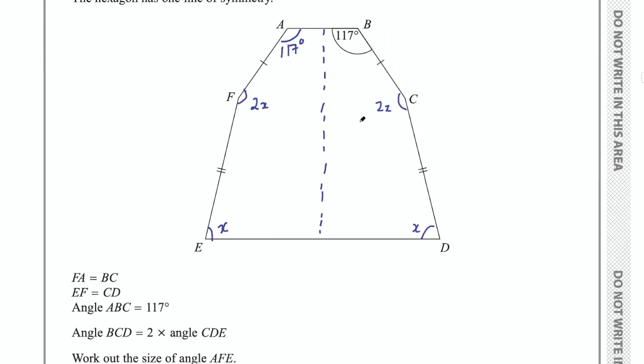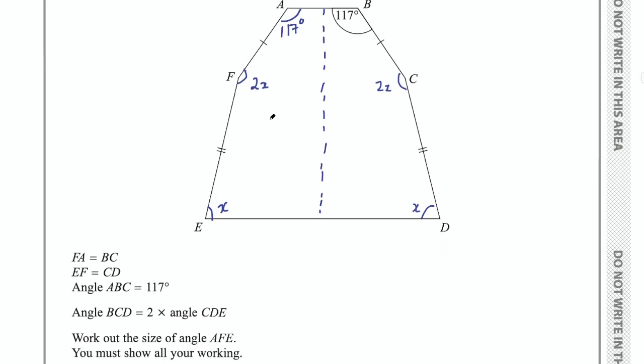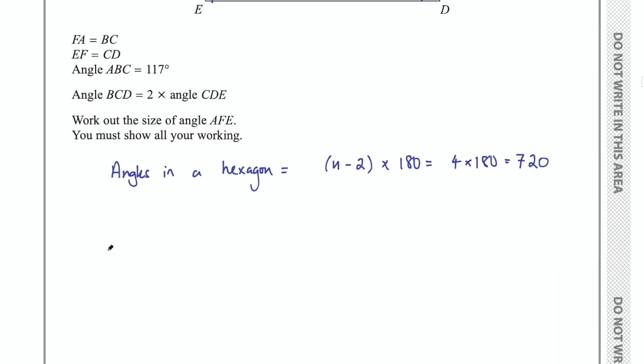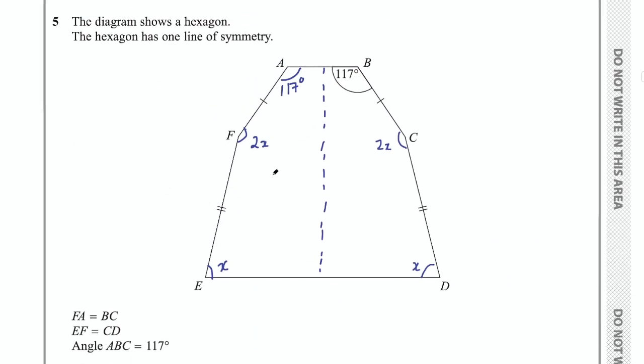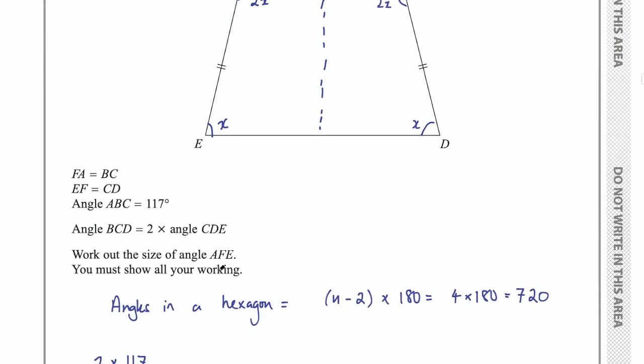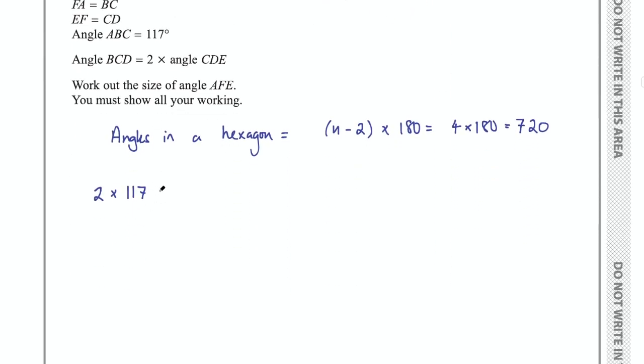So we know that all of these angles need to add up to 720 degrees. Let's create an equation now—it will have one unknown of x which we'll be able to solve for. We can say then that two lots of 117, remember we've got two of those angles up there, plus 2x plus 2x plus x plus x—how many x's is that? That's six lots of x. So we're going to add on 6x, and that's going to equal 720.